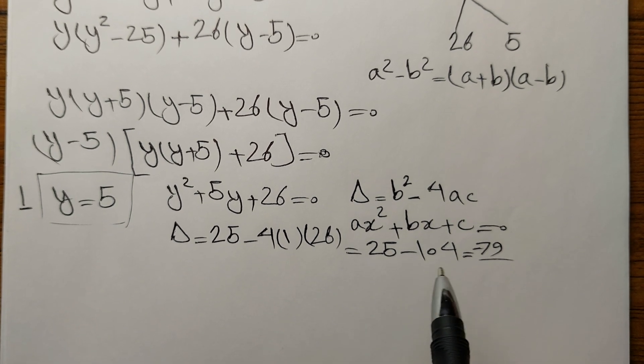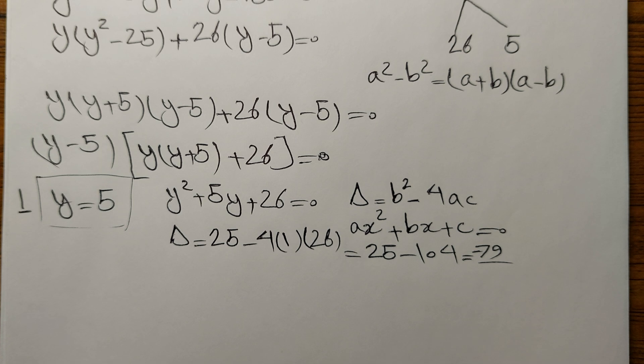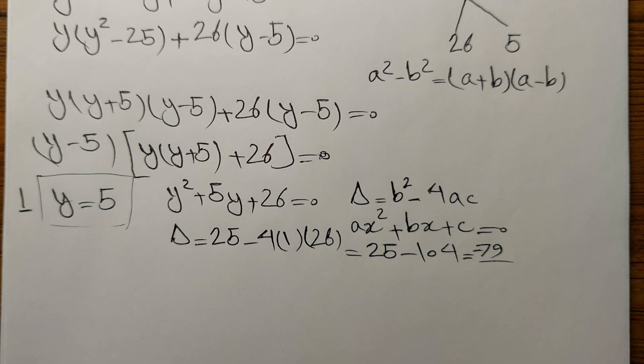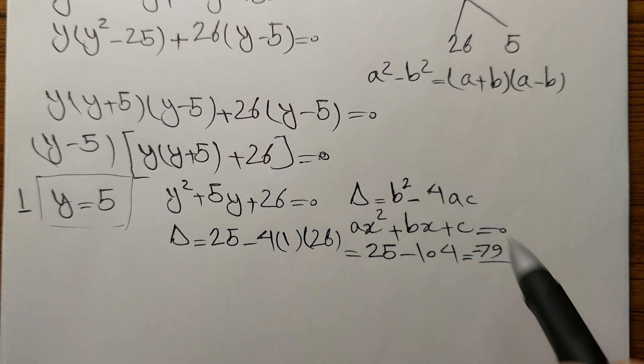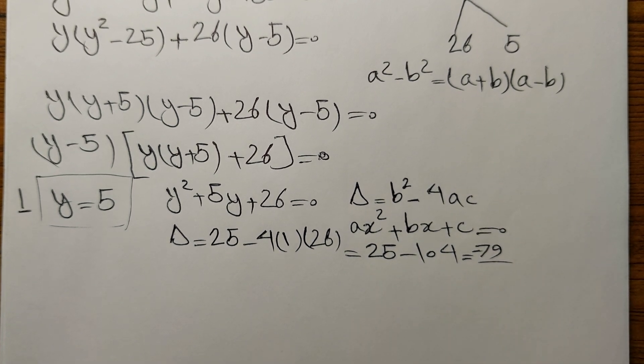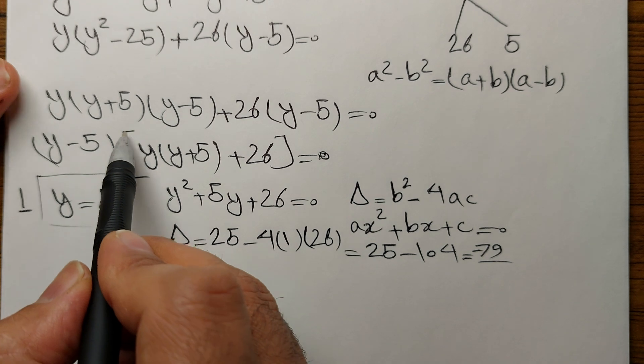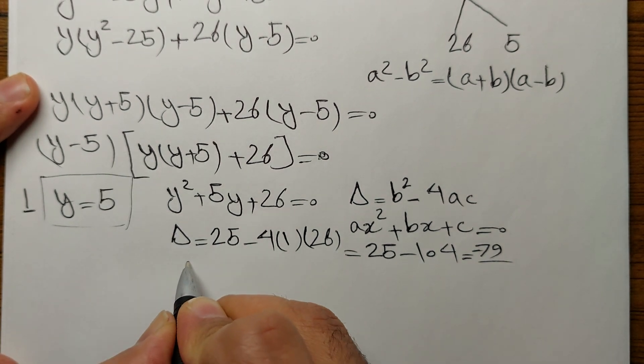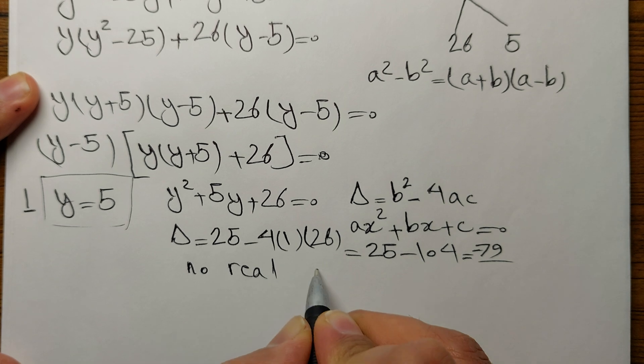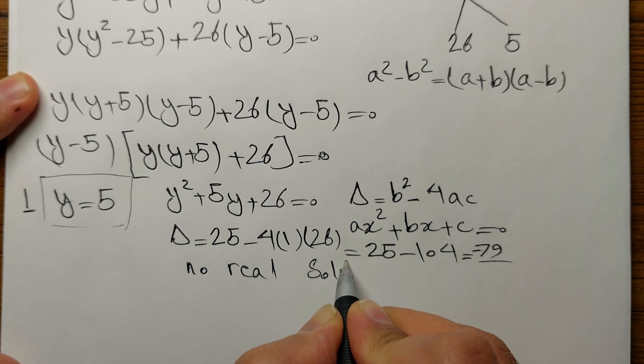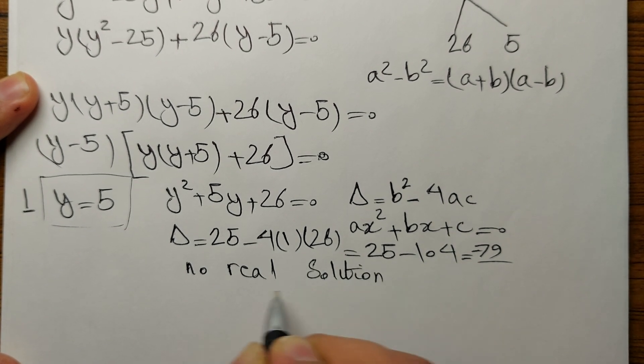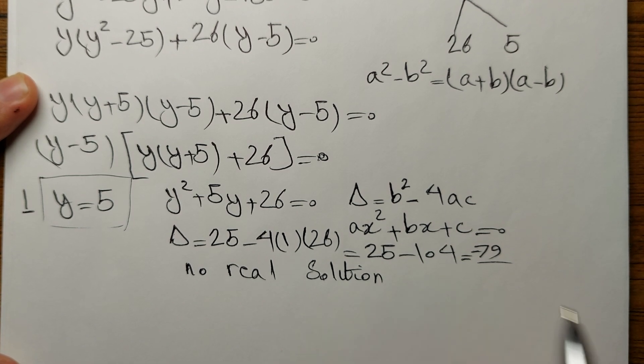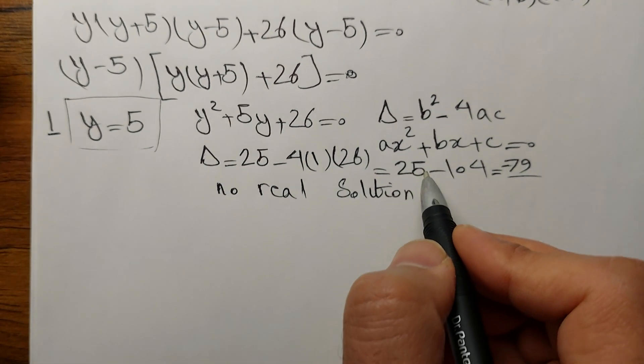That's a negative number. Whenever delta is negative, then this quadratic function has no solutions at all. There is no solution because this parabola doesn't intersect the x-axis at all. It is either above that or under that. It doesn't intersect that. So there is no real solution. You might be asking, are there any unreal solutions? Yes, of course, but this is out of the scope of today's class.